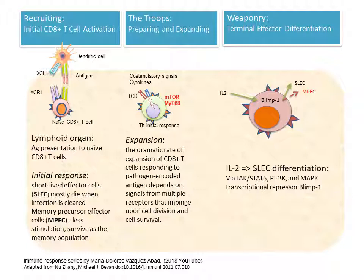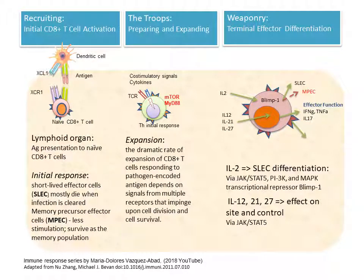Interleukin-2 signaling will stimulate the short-lived effector cells to differentiate above the memory cells, telling them to be ready for attack very quickly. Depending on the type of antigen, the antigen-presenting cell, and the co-stimulatory signal, differentiation driven by IL-12 produces a TH1 phenotype characterized by secretion of interferon-gamma and TNF-alpha. If driven by IL-21, it triggers a TH17 response. IL-27 is also important and will be discussed later, as it triggers a control signal by secreting interleukin-10.